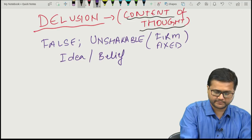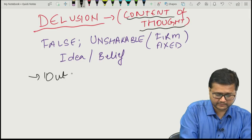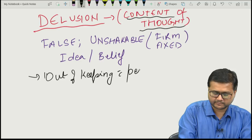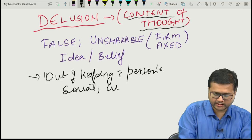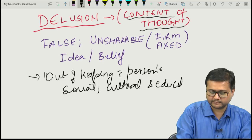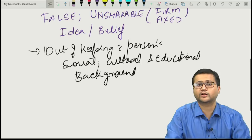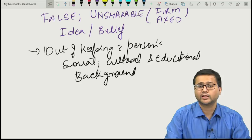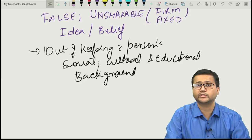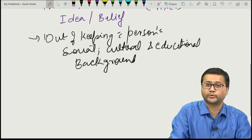Delusion is a false and unshakable idea or belief which is out of keeping with a person's social, cultural, and educational background. For example, if a community or culture believes that a black cat crossing their way brings misfortune, this is not out of keeping with cultural belief — so it is not a delusion.